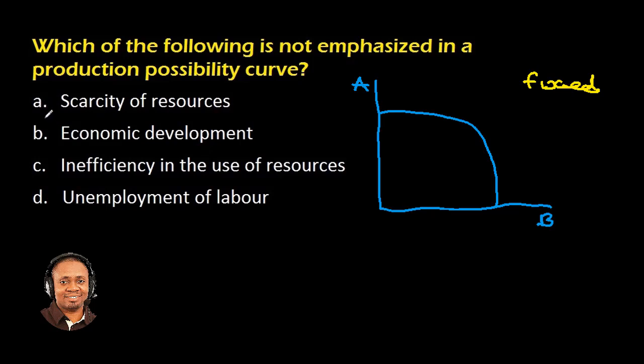Option A says scarcity of resources. One thing we need to understand about production possibility analysis is that whenever there is scarcity of resources, this is indicated somewhere within the production possibility curve. Scarcity of resources is indicated within the production possibility curve because the resources are limited. The resources that are available cannot meet up with the PPC.